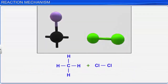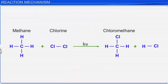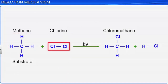In the reaction between chlorine and methane, methane supplies the carbon atom to form chloromethane. Hence, methane is the substrate and chlorine, the other reactant, is the reagent.